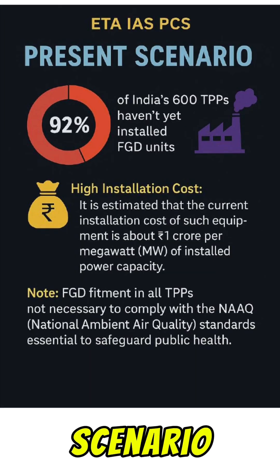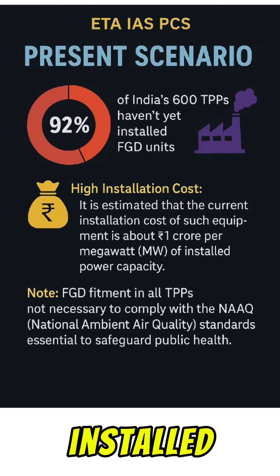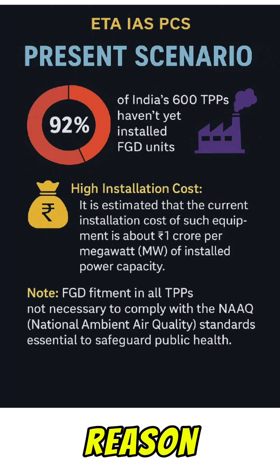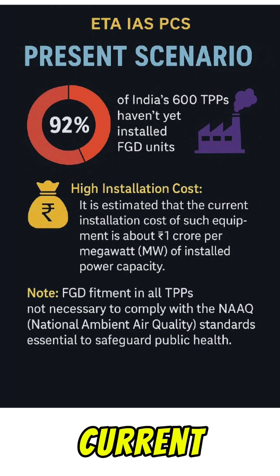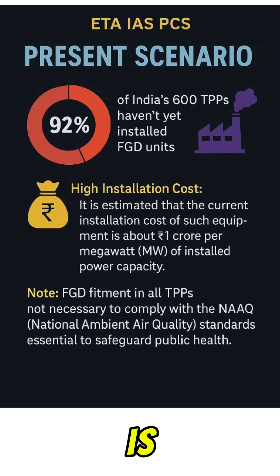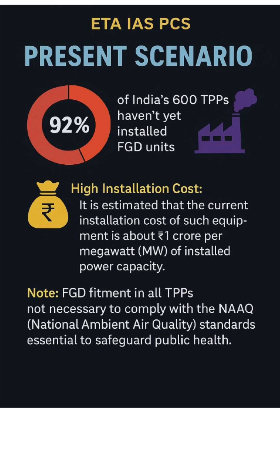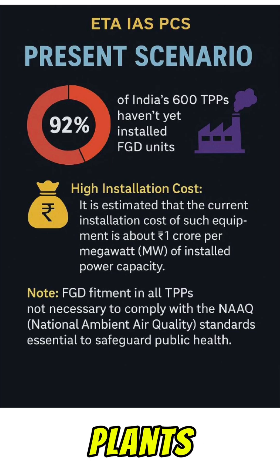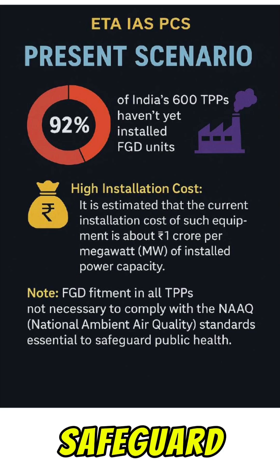Talking about the present scenario, in India about 92% — roughly 600 thermal power plants — have not yet installed FGD units. The main reason is the high installation cost, estimated at about 1 crore per megawatt of installed power capacity. It is also important to note that thermal power plants not complying with FGD fitment do not necessarily meet the National Ambient Air Quality Standards (NAQS), which are essential to safeguard public health.